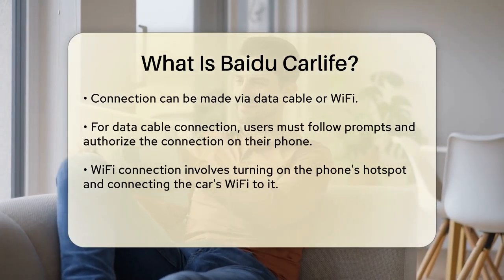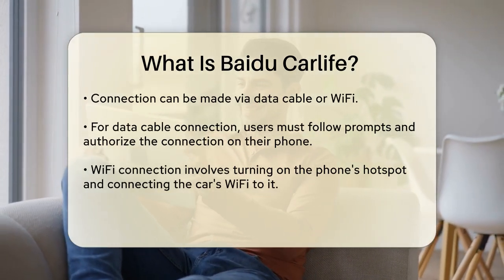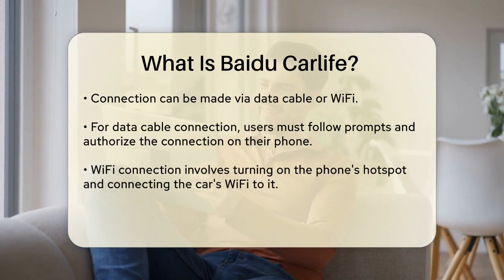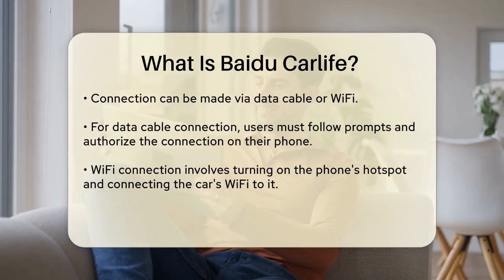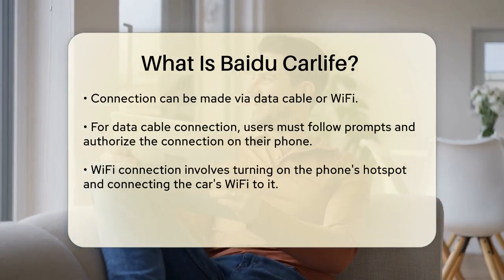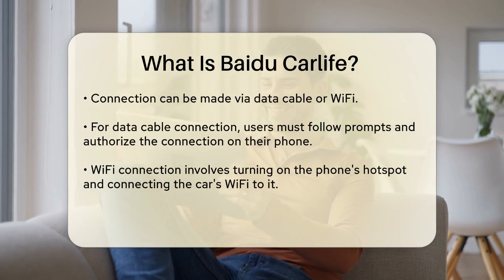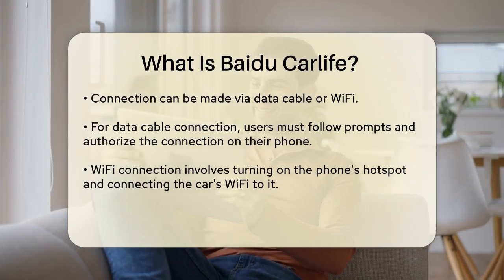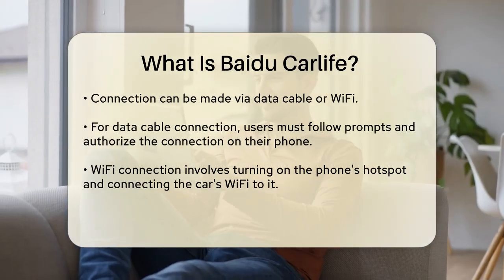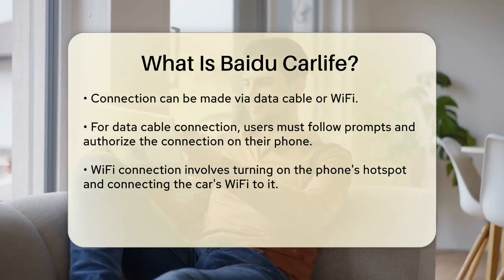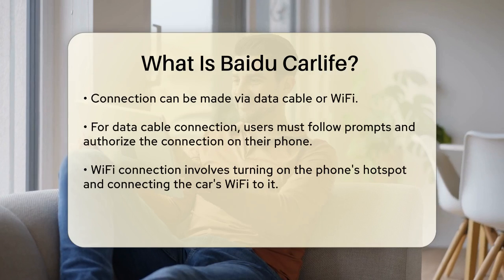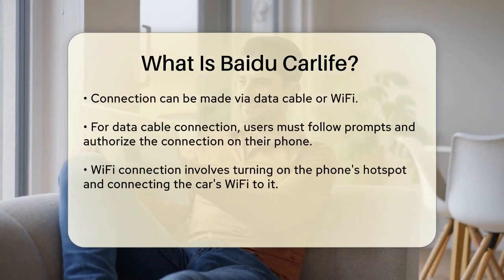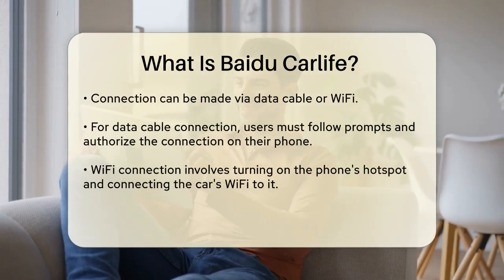For a Wi-Fi connection, you turn on your phone's hotspot, connect the car's Wi-Fi to this hotspot, and then open the Baidu CarLife software on both devices. You need to confirm the pairing on both devices the first time, but subsequent connections are simpler.